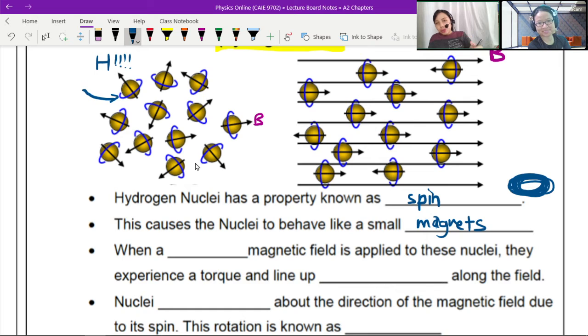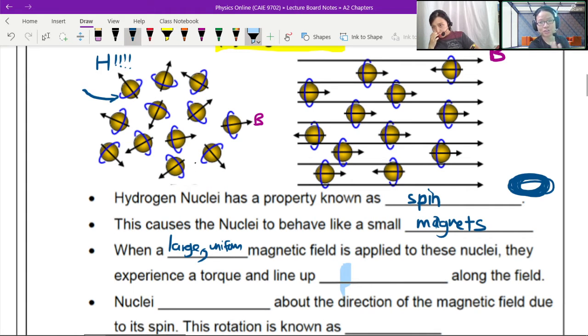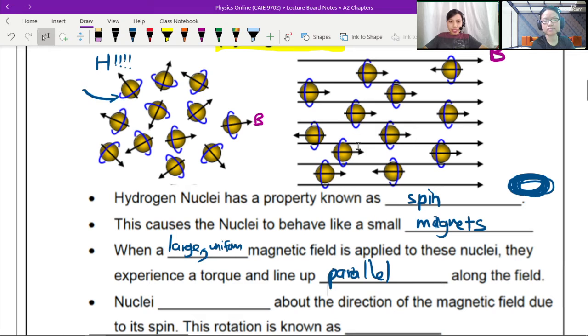When you suddenly come in with a big strong, large uniform magnetic field, what happens to all these small fellows, the small magnets? They have to follow the big magnetic field. So they all nicely align either with the magnetic field or kind of like opposite to the magnetic field. They experience a torque and they line up parallel or along the magnetic field. The condition here is that you have to align parallel. Most will align in the same direction, but you get one or two rebels that will go against the direction of the magnetic field.